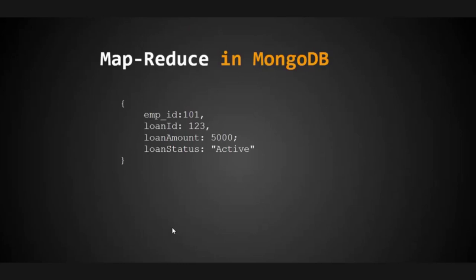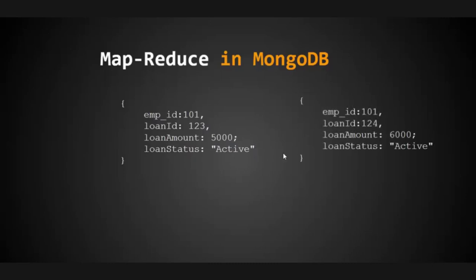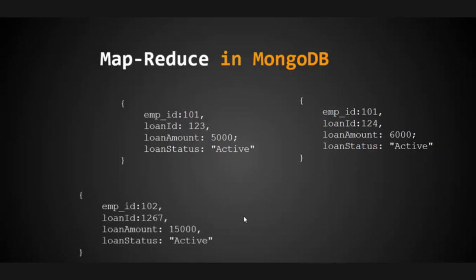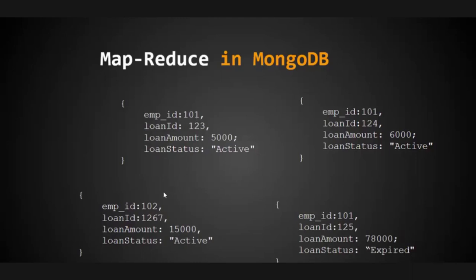Suppose we have a document containing employee loan details. The document has fields: employee ID, loan ID, loan amount, and loan status. One employee can have many loans with different banks, and loans can have a status of either active or expired.